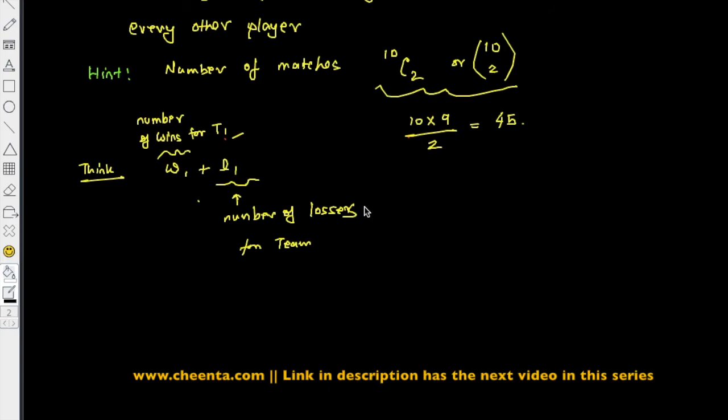Secondly, also think what is the value of w1 plus w2 plus w3 up to w10. What is the value of l1 plus l2 up to l10? So if you think about these three things: number of matches, value of w1 plus l1 and w2 plus l2 and so on, and the value of the sum of the wins and the sum of the losses...